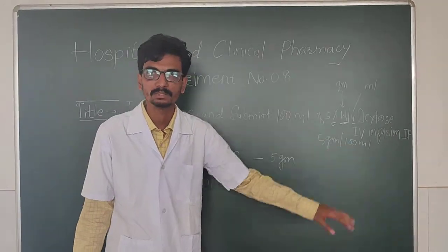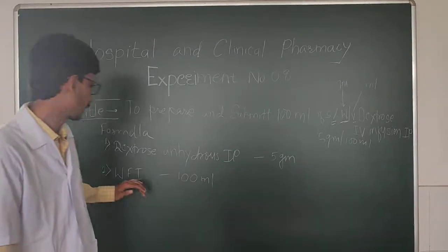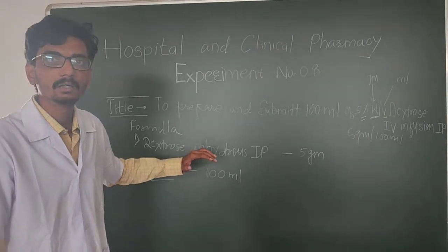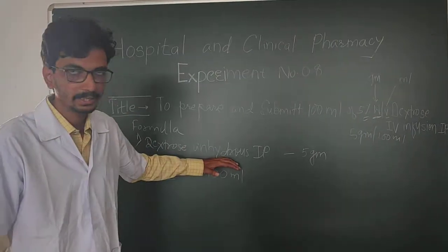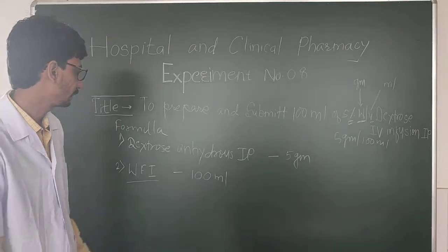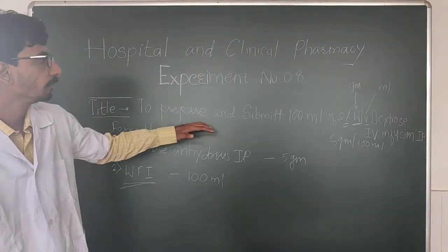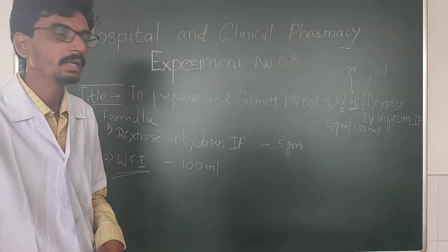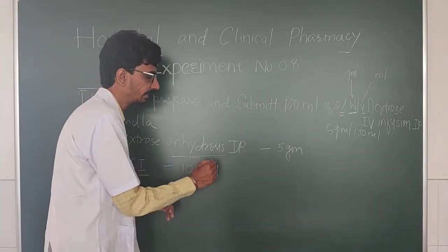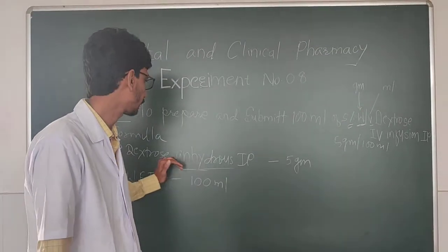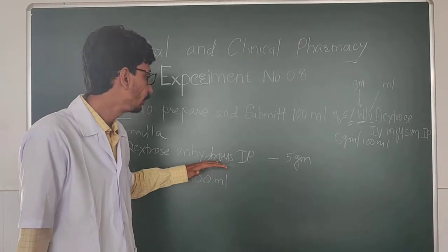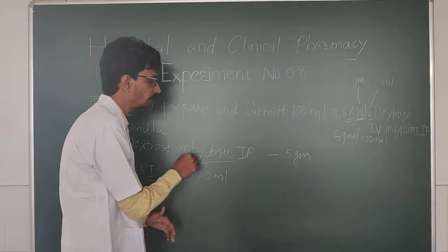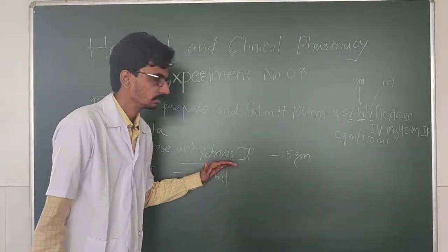For intravenous preparation, the solvent system used is water for injection. Dextrose anhydrous components are totally solubilized in water. Dextrose anhydrous is highly water-soluble, which is why dextrose anhydrous IP is totally water-soluble. We have a positive type of solubility enhancer.